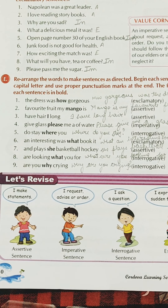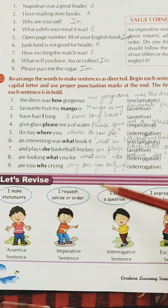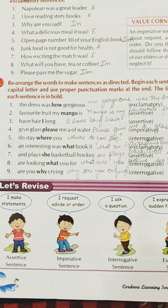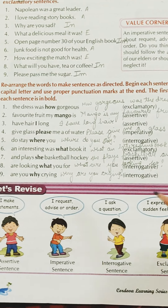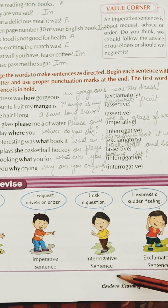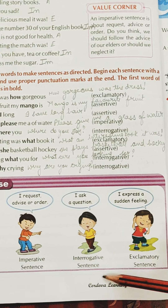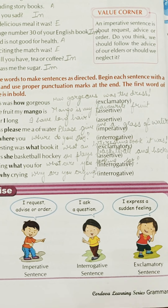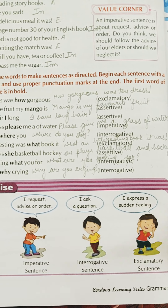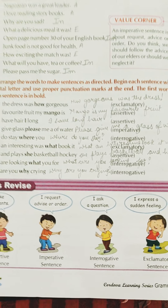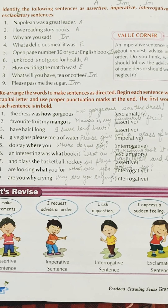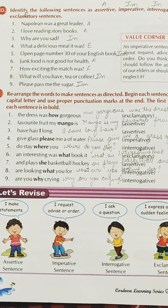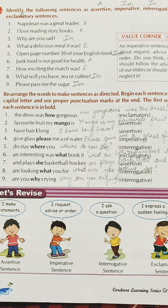Here is a good way to remember the types of sentences: 'I make sentences' — assertive; 'I request, advise, or order' — imperative; 'I ask a question' — interrogative; 'I express a sudden feeling' — exclamatory. Children, this ends your chapter. If you have any doubts, feel free to contact me. Thank you.